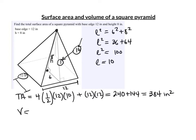For the volume of this pyramid: one-third times the area of the base (12 × 12) times the height of the pyramid — not the slant height — which is 8. Punching this into the calculator, the volume is 384 inches cubed.